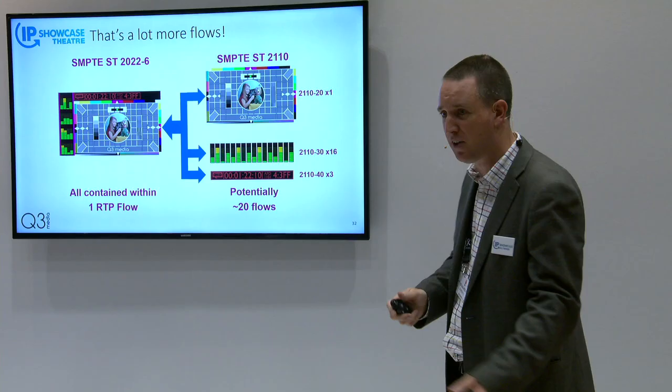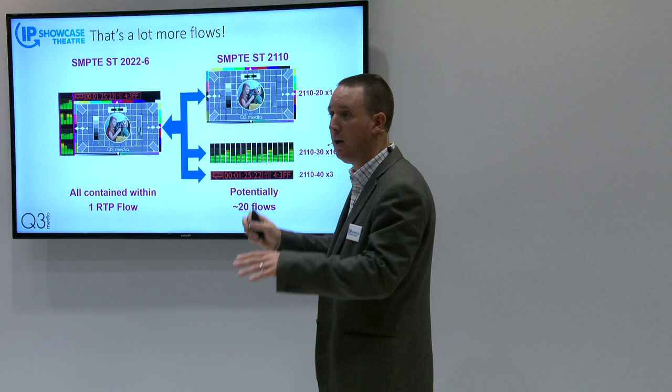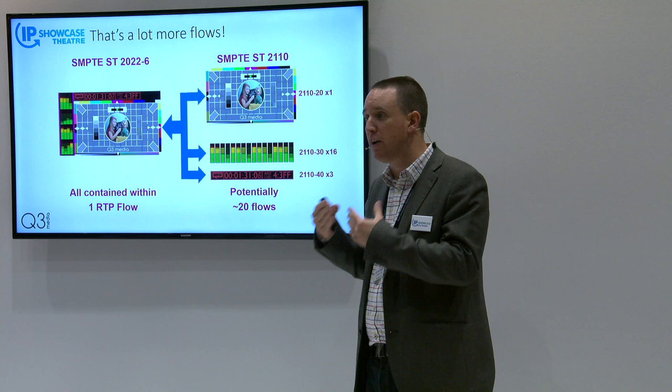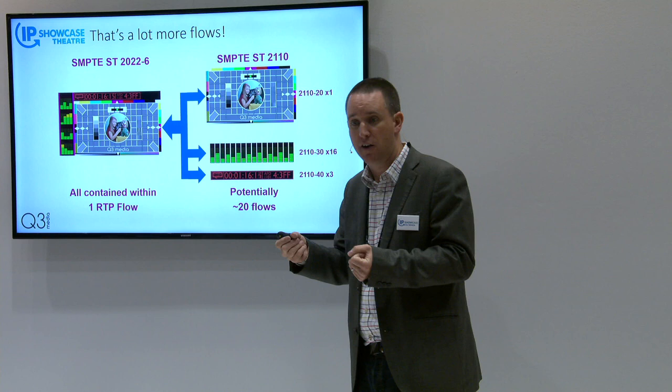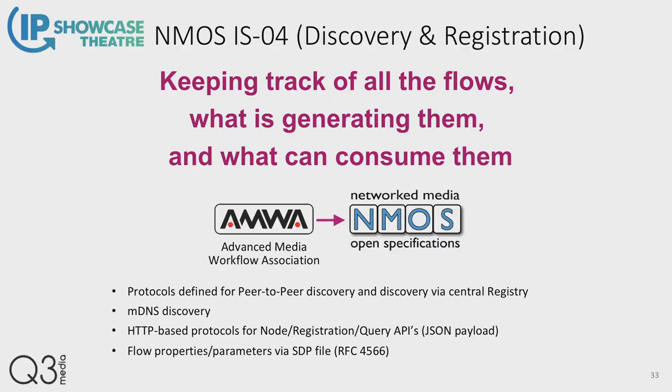Depending on how we break things down — for example audio could be carried in one flow or split into 16 flows — we could go from 1 to 20 multicast addresses and ports to worry about, keep track of, and configure. That's a lot of typing of IP addresses, and that's what we don't want. The work going on in this room and with the industry bodies is all about moving to a future where we can have all this clever IP video in a plug-and-play kind of environment. We're not quite there yet, but we're getting there.